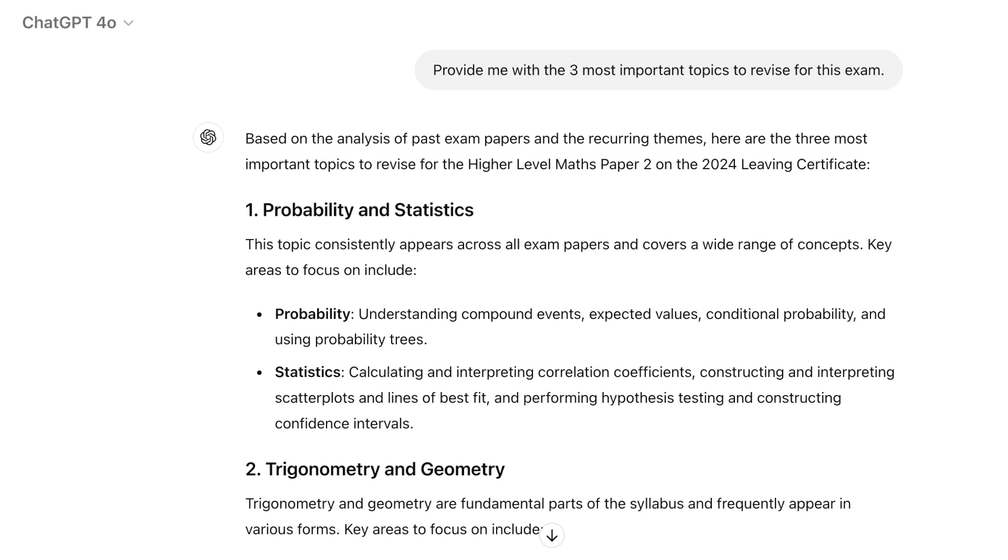Based on the analysis of past exam papers and the recurring themes, here are the three most important topics to revise for the Higher Level Maths Paper 2 on the 2024 Leaving Certificate. Number 1: Probability and Statistics. This topic consistently appears across all exam papers and covers a wide range of concepts.